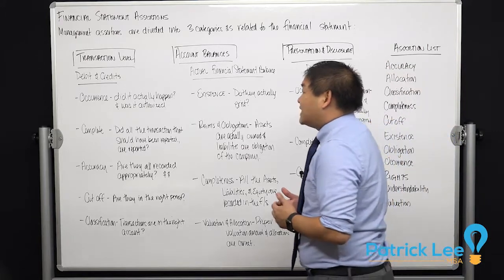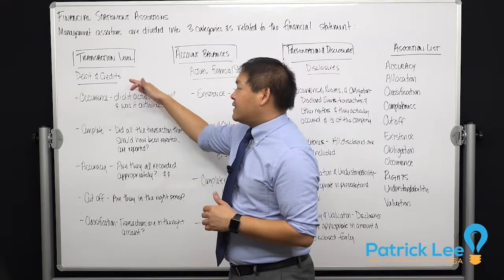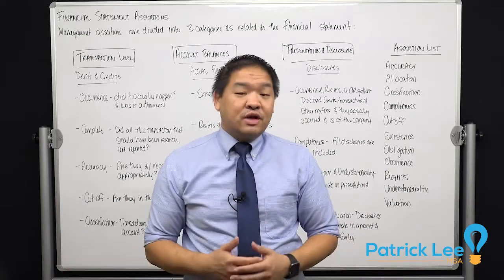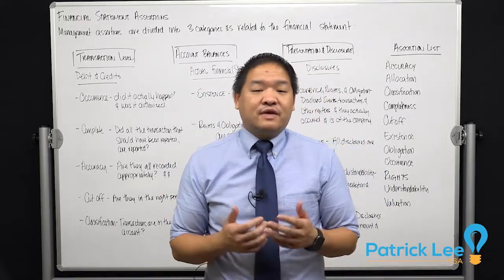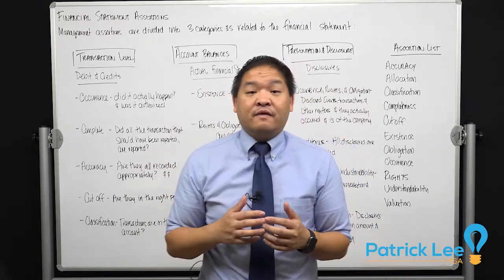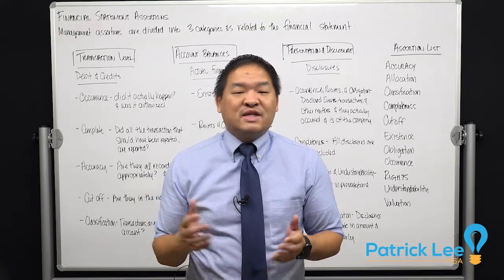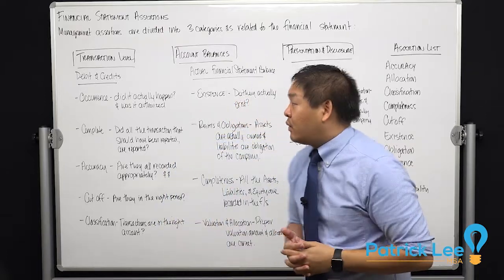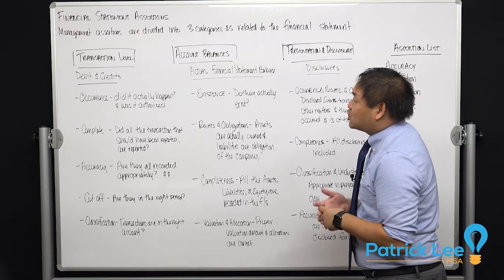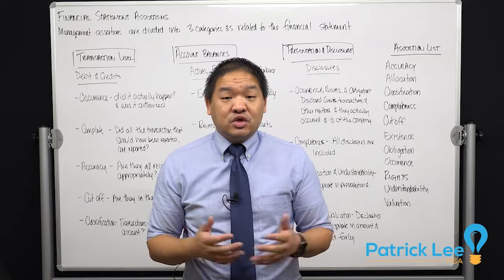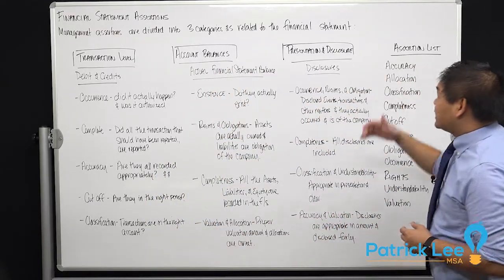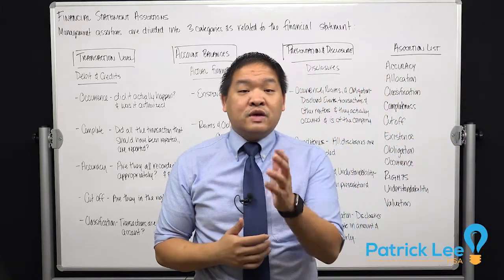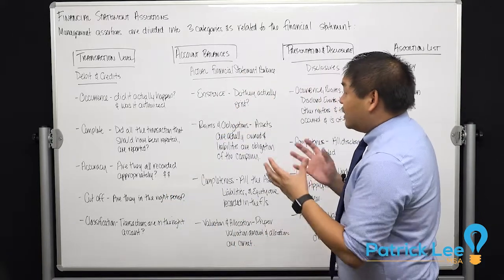The first category is the transaction level — the actual debits and credits. Management makes assertions on those numbers and we test at that level of detail. Some would say that's not actually on the financial statement, and that's correct — the transaction level may be the detail behind the financial statement, but if the number is based on that detail, we need to look at it. The second is account balances — the actual financial statement balances a company issues. The third is presentation and disclosure, which covers the actual presentation of the financial statements as well as disclosures included for users.